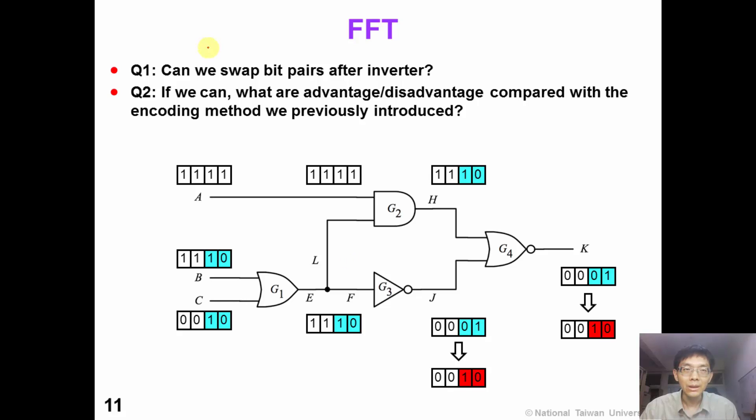Finally, we have two questions for you to think about. First question, we mentioned that unknown bits are difficult to handle when we have inverter. For example, suppose 1, 0 represents unknown. After inversion, we have 0, 1. Can we simply swap these two bits so that it becomes unknown again? Can we do it? Is this a good idea?